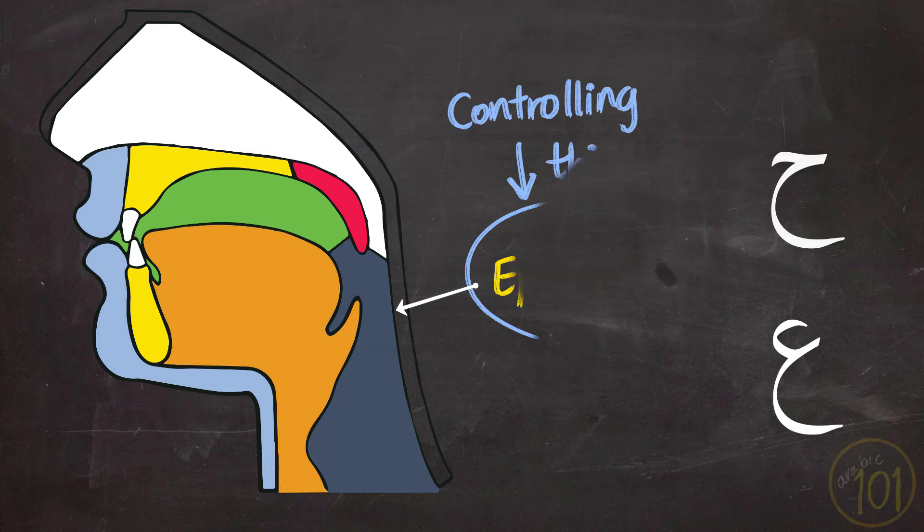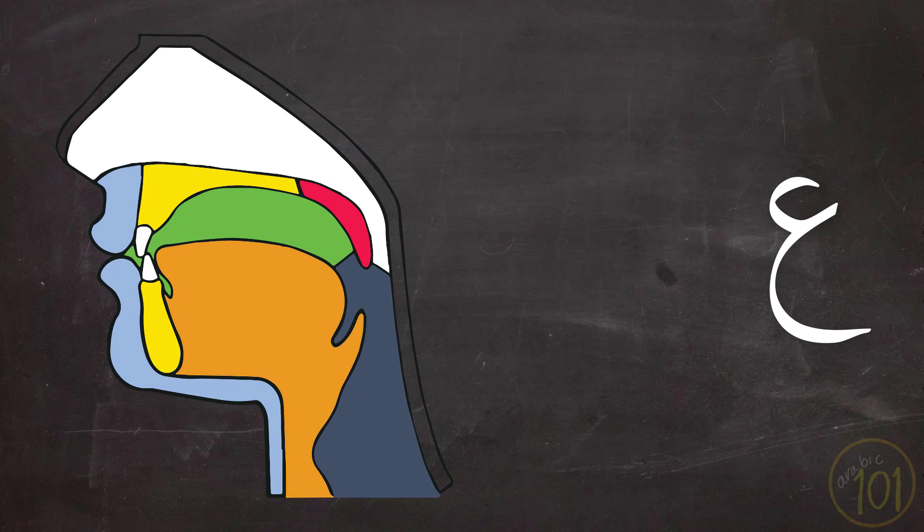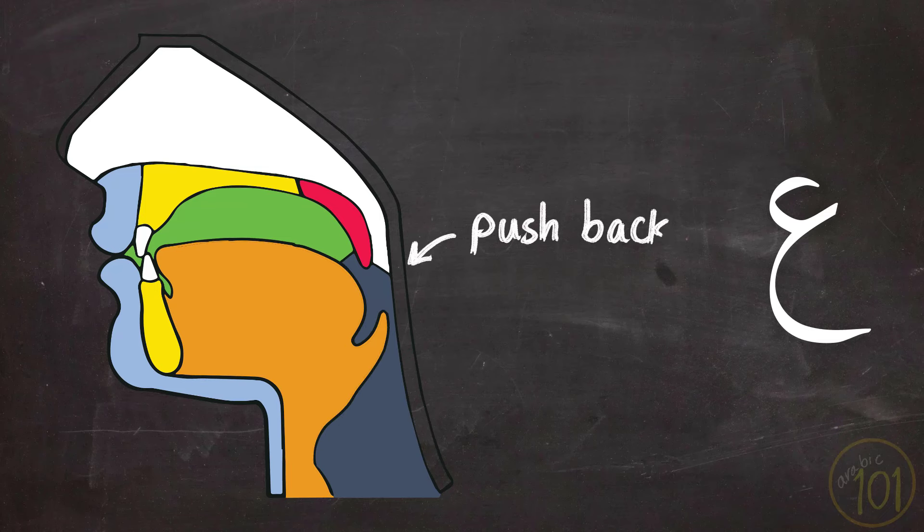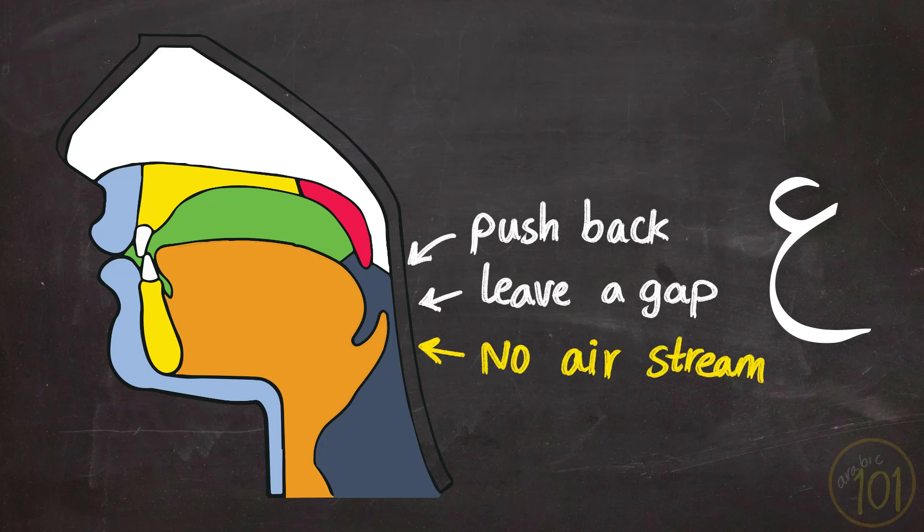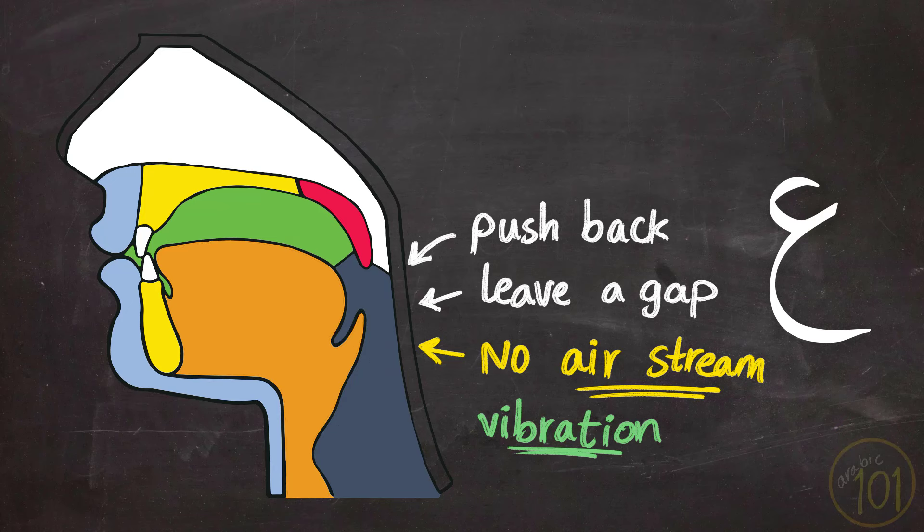We'll start with the sound of Ayn. Ayn is produced when the epiglottis is pushed all the way back to the wall of the throat, while leaving a small opening at which the sound is generated. Pay attention. The sound is not generated by pushing air out, but by vibrating your vocal cords.